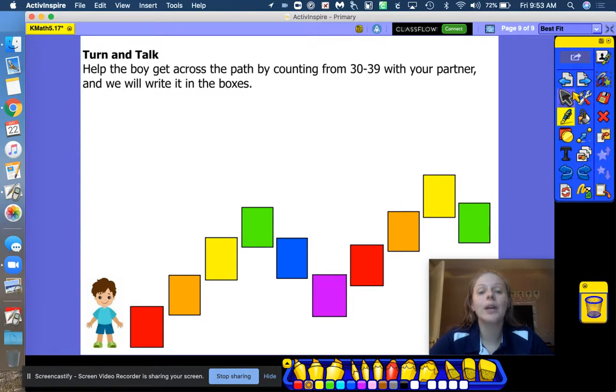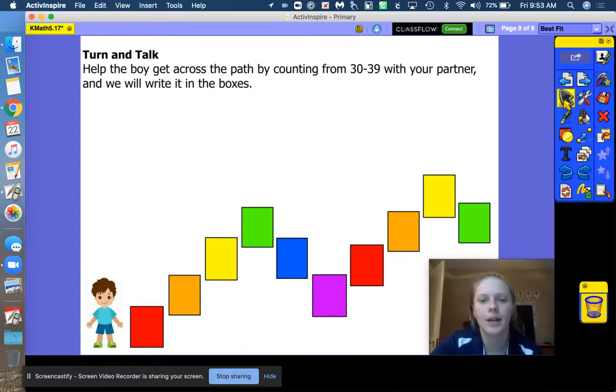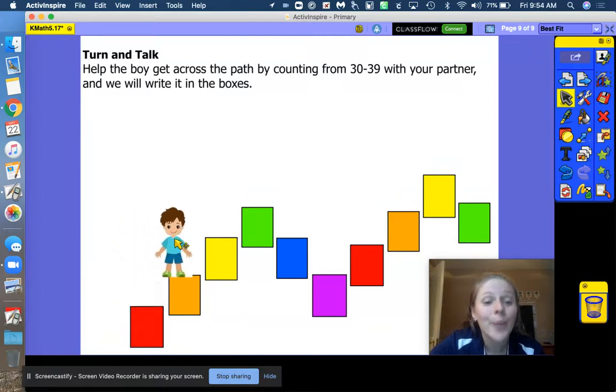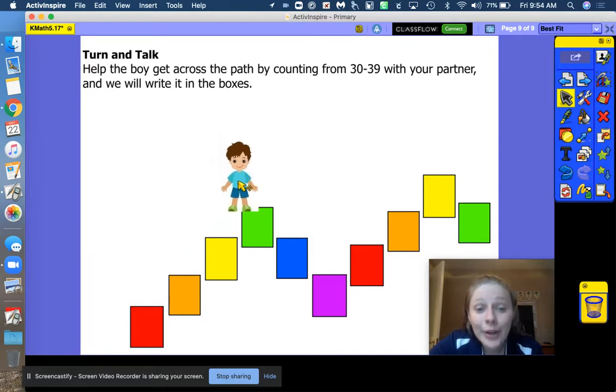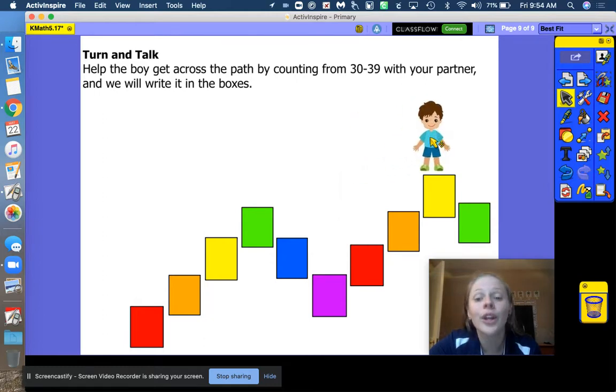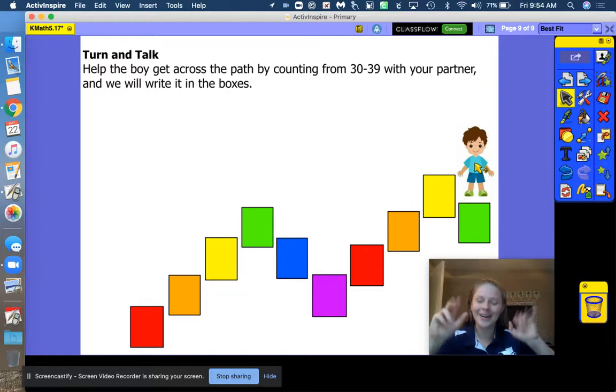Alright. We are going to help the boy cross the path one more time. Let's do it in a baby mouse voice to help him cross. Okay. We're going to start at 30 and stop at 39. Okay. Don't let me forget. 30. Stop at 39. Quick, get your little mouse voice on. 30, 31, 32, 33, 34, 35, 36, 37, 38, 39. Woo. Good job, friends, helping him cross the path and stop at 39. Thanks for joining me. Bye.